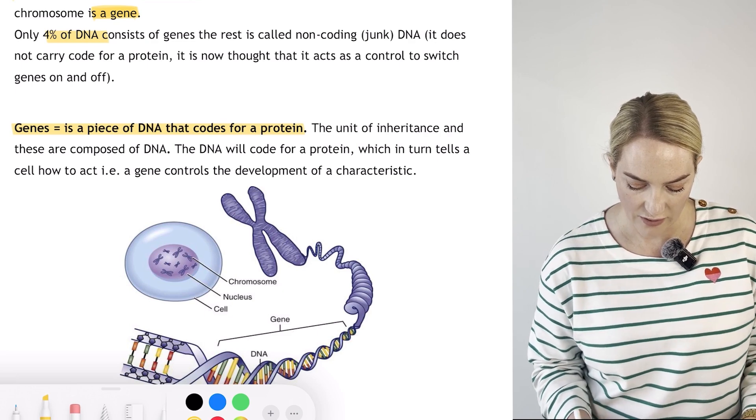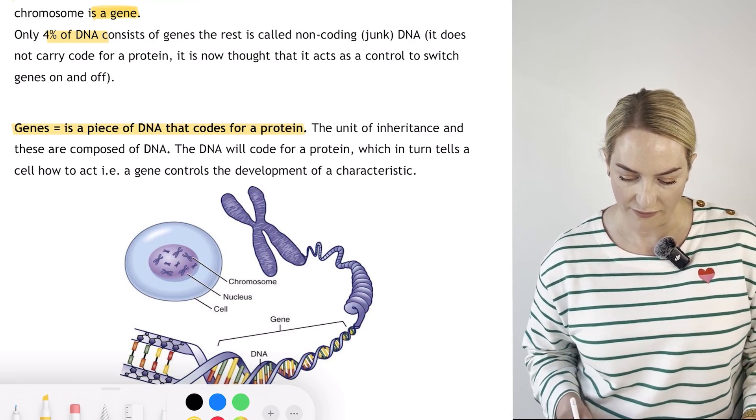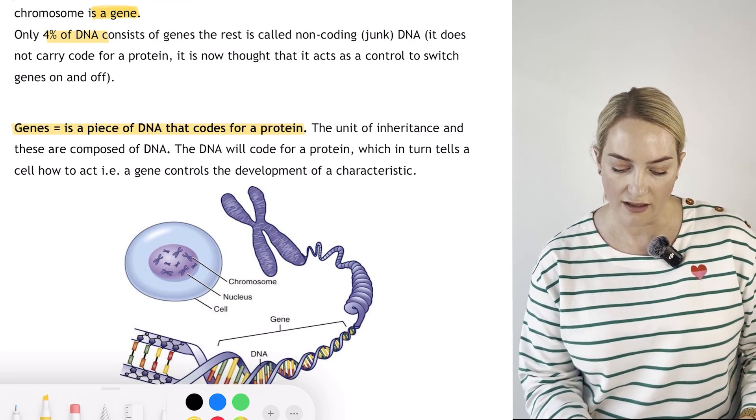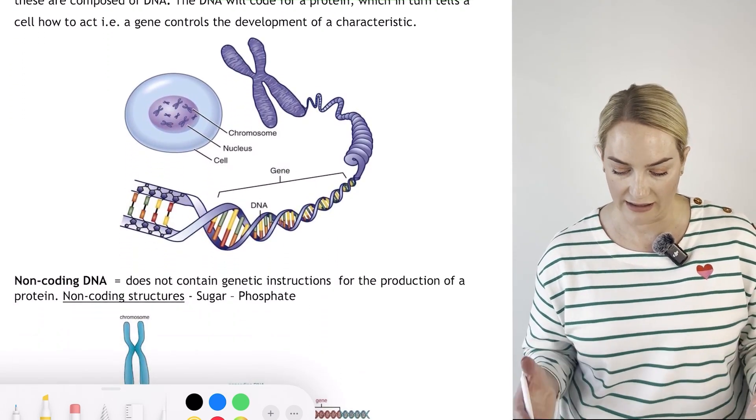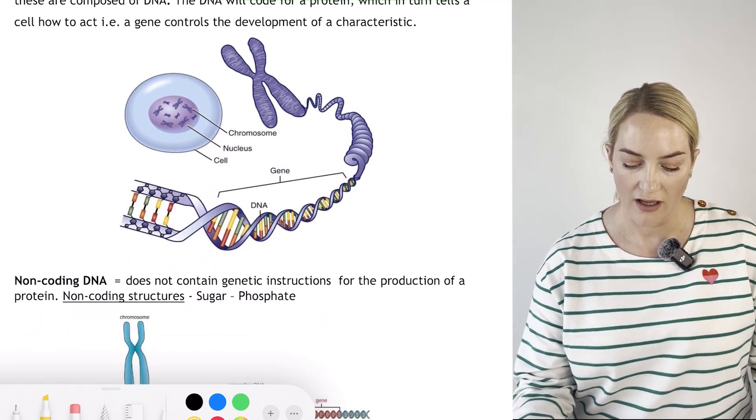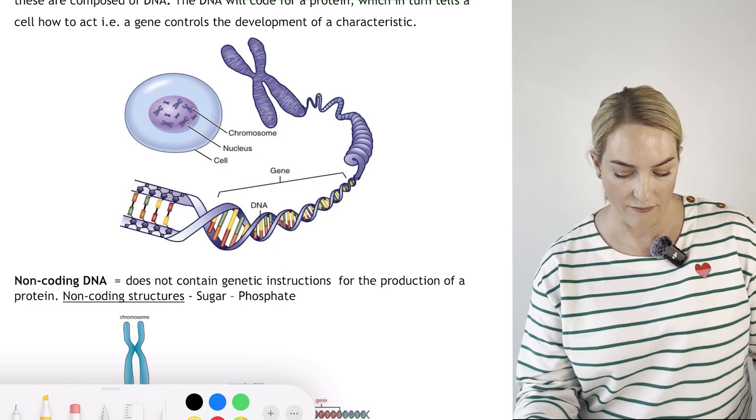A gene is a piece of DNA that codes for a protein. The unit of inheritance is composed of DNA, so DNA will code for a protein which will in turn tell a cell how to act.